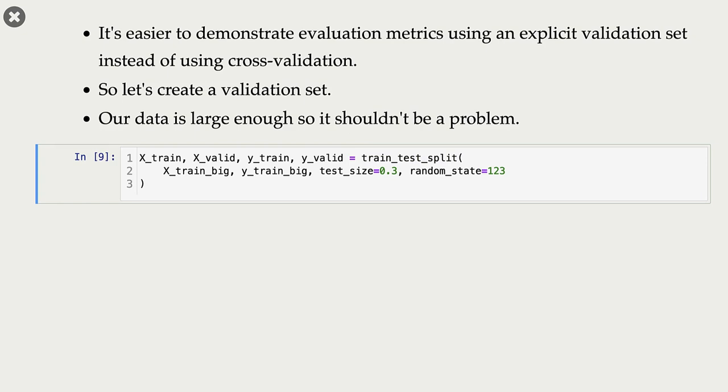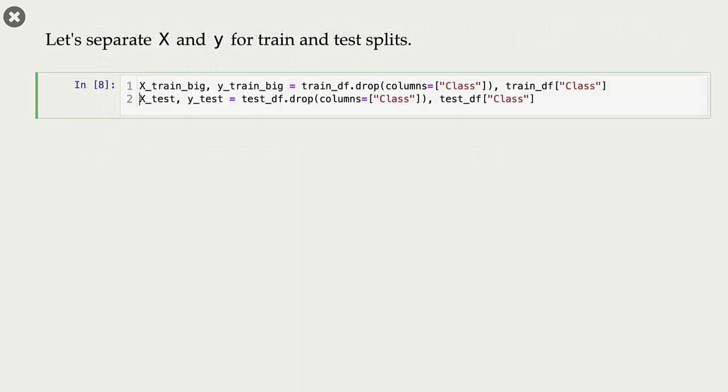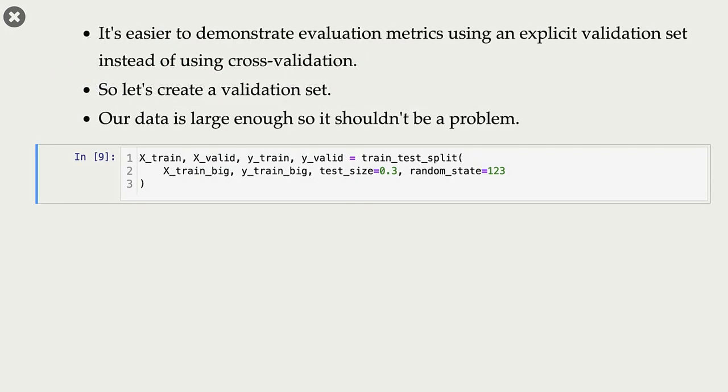So when I do that, I have now X_train and Y_train. I have X_valid and Y_valid. And I have X_test and Y_test. Now again, we have been carrying out cross-validation. And I told you in 571 that having a single validation set is not a great idea.